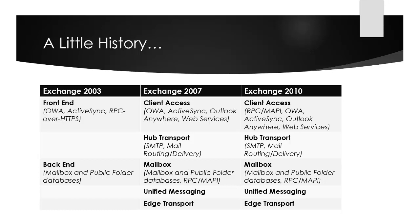In Exchange Server 2007, Microsoft introduced a more complex server role architecture, abstracting everything out into five server roles. The Client Access role was similar to the Exchange 2003 front end, responsible for client Webmail, ActiveSync, Outlook Anywhere, and other web services. The Hub Transport server was for SMTP, mail routing and delivery within the organization, and could also be used for routing in and out of the organization.